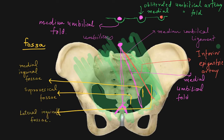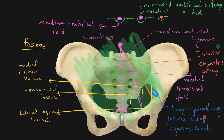Here we have to recollect one more thing — the inferior epigastric artery. Lateral to this there is the deep inguinal ring, which is the starting point of the inguinal canal, and here you will get the superficial inguinal ring, which is the end point of the inguinal canal.